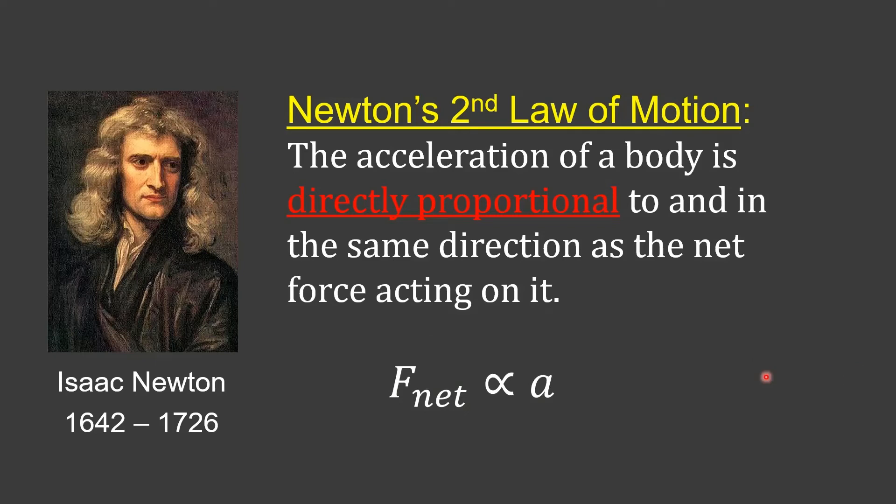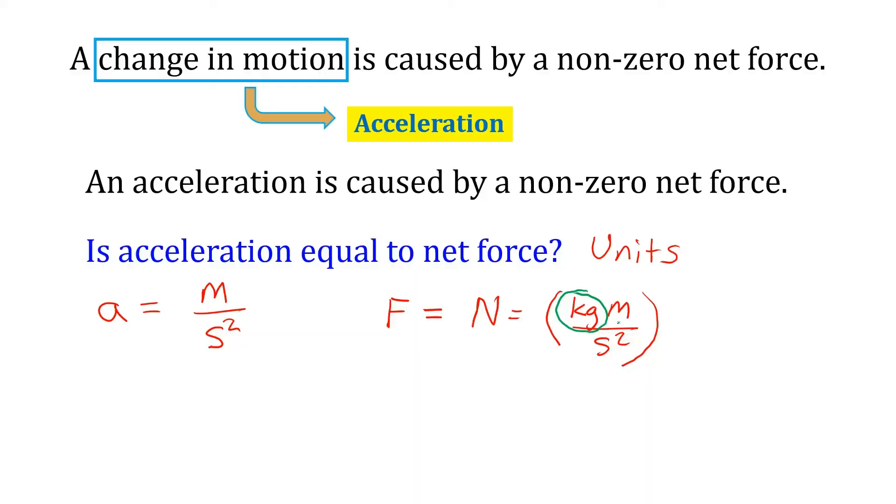Mathematically, how we can write that is with the proportional to sign. So this is saying that the net force is proportional to acceleration. But in physics, what we really want is an equality. We want that proportional to become an equal sign. So in order to do that, we're missing something. What is that missing link?